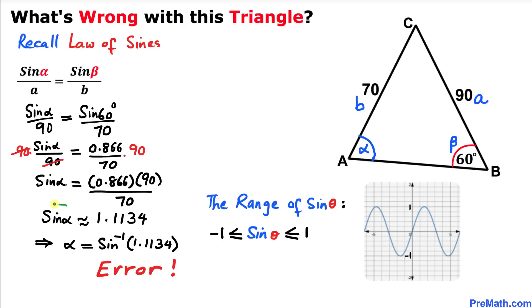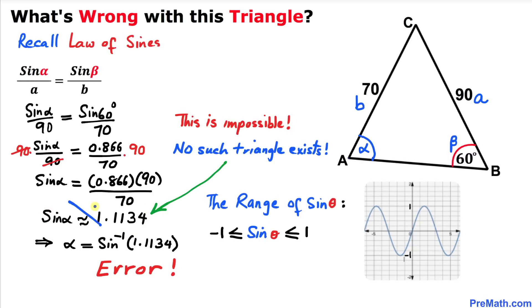Here we can see that our sine of alpha value is approximately equal to 1.1134, and this is not within the range of the sine function. So this is not possible. Therefore, we conclude that no such triangle exists.